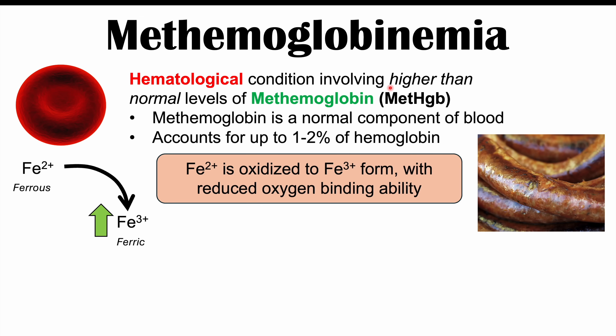Methemoglobin is related to changes in the iron atom in hemoglobin. Methemoglobin occurs when Fe2+, the ferrous ion, is oxidized to Fe3+, the ferric ion. The Fe3+, or ferric ion, has a reduced oxygen binding ability. So this is what methemoglobin is — when those iron atoms become oxidized to the Fe3+ ferric ion form.